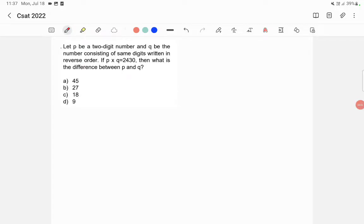Let p be a two-digit number and q be the number consisting of same digits written in the reverse order. If p into q is equal to 2430, then what is the difference between p and q?